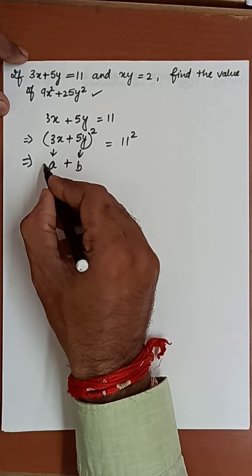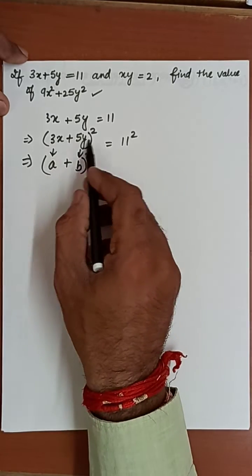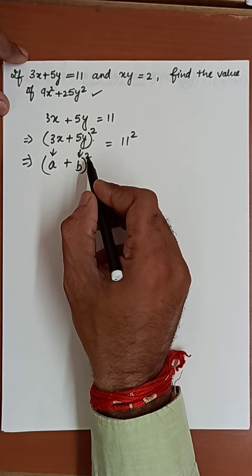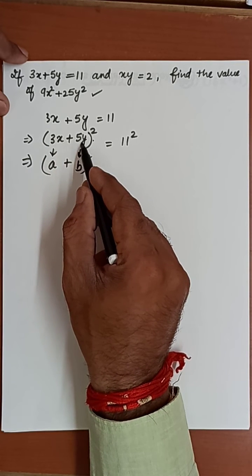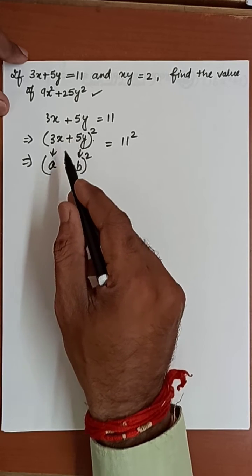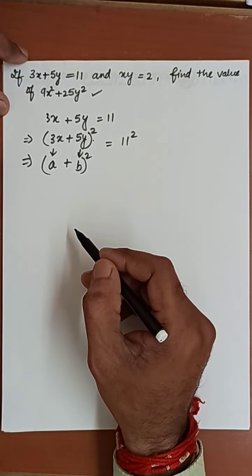Now it is making an identity. First term can be taken as a, second term as b. Use the same sign, same bracket, same power. Your question is based on a plus b whole square. It is a binomial, and the square of a binomial is always solved using the identity a plus b whole square or a minus b whole square.